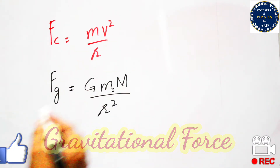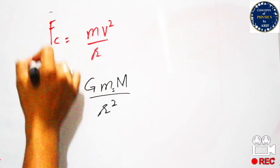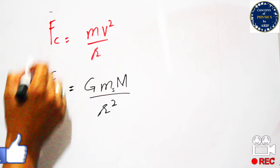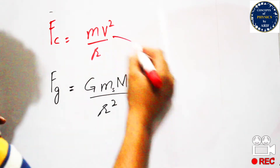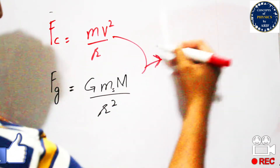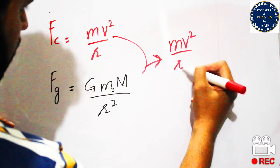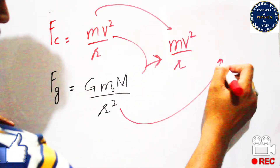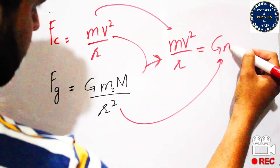These two forces are balanced to keep the satellite in orbit, so they are equal. Setting centripetal force equal to gravitational force: mv²/r = G·M_s·M / r².